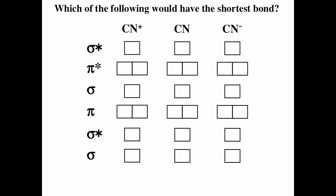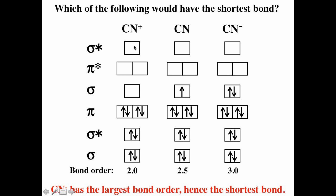For the CN species: CN⁻ has 4 + 5 + 1 = 10 valence electrons — six in bonding, two in anti-bonding, bond order = (6 − 2)/2 = 2. CN has 4 + 5 = 9 valence electrons — seven in bonding, two in anti-bonding, bond order = 2.5. CN⁺ has 4 + 5 − 1 = 8 valence electrons — eight in bonding, two in anti-bonding, bond order = 3. So CN⁺ has the largest bond order (3), meaning the shortest and strongest bond. CN⁻ has the weakest bond with bond order 2.